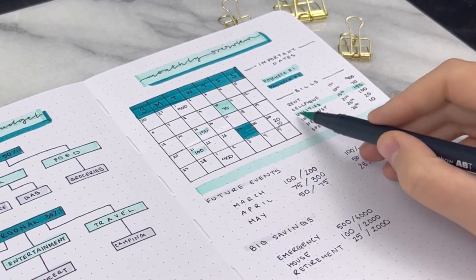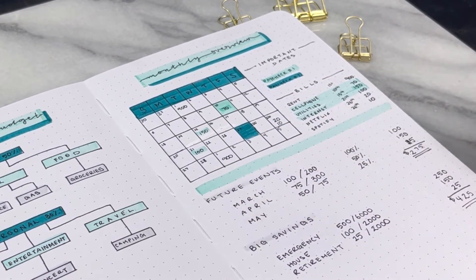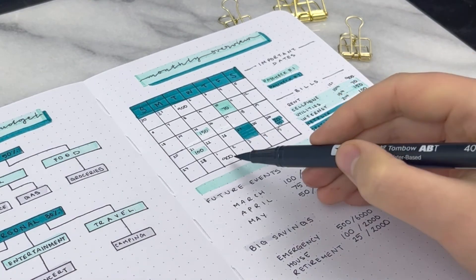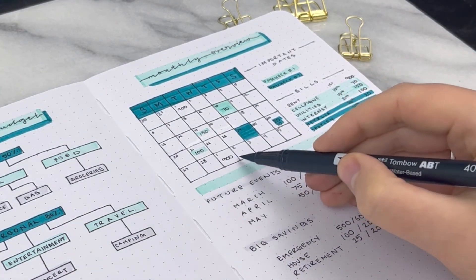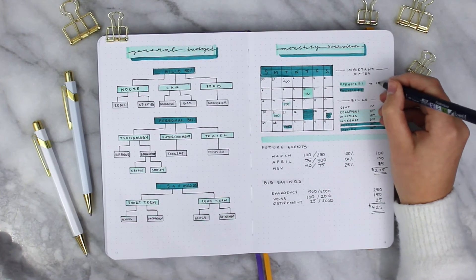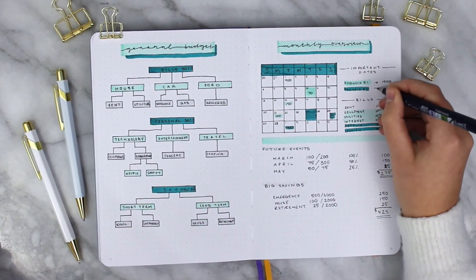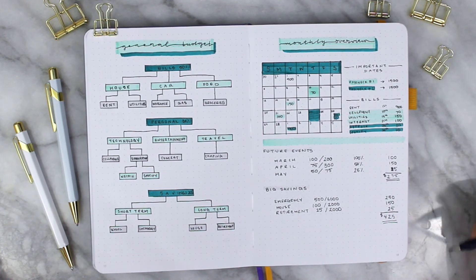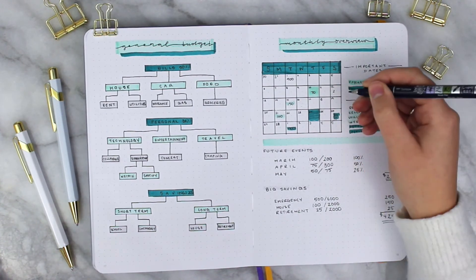So paycheck number one is covering my bills for my cell phone, my utilities, and my internet. Paycheck two is covering my Netflix, my Spotify, but also rent from the first of March. Even though it's a February paycheck, it's covering my March bill because there's no March paycheck before March 1st. So keep those things in mind when you're trying to figure out exactly where your money is going.